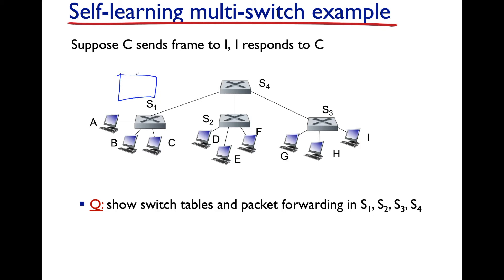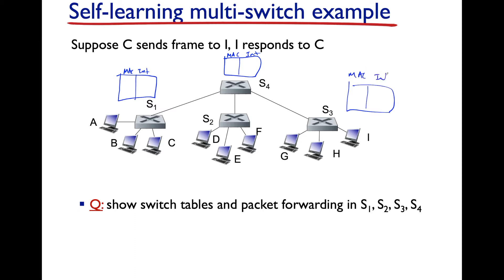Each switch table has a MAC address column and an interface column — we won't track TTL. We number the interfaces 1 through 4 for each of S1, S4, S3, and S2.